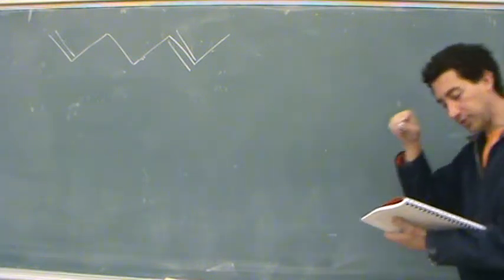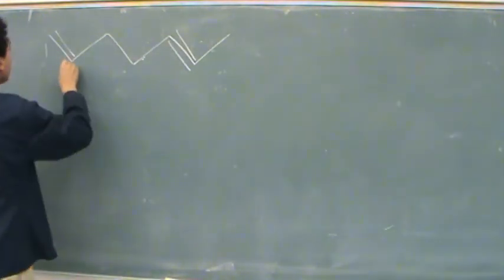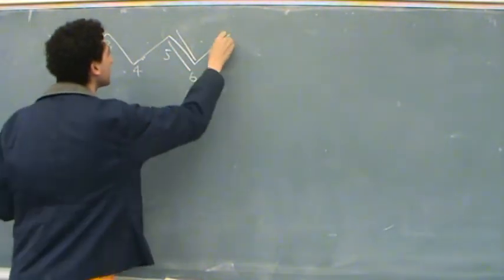So for this structure, we have a couple choices. When we number it: one, two, three, four, five, six, seven.